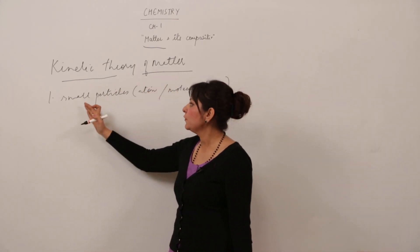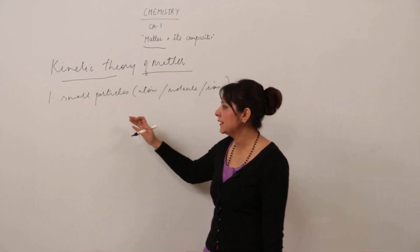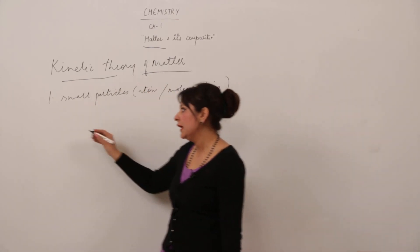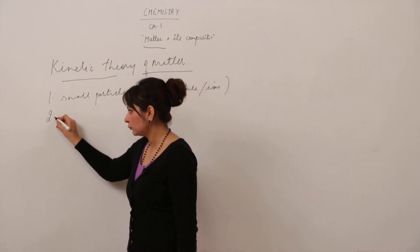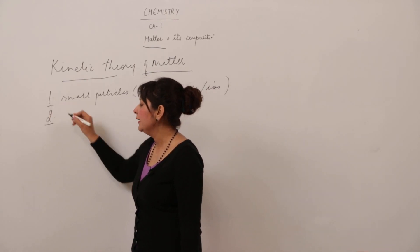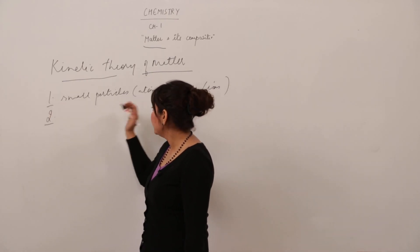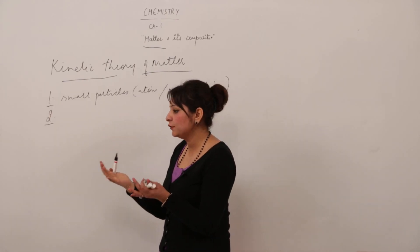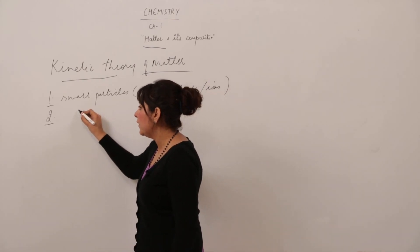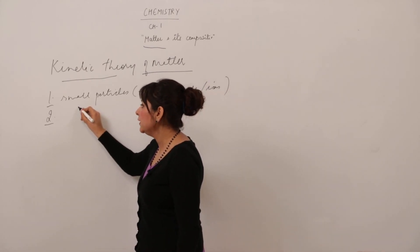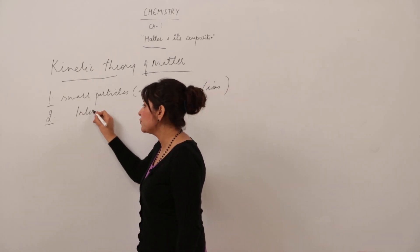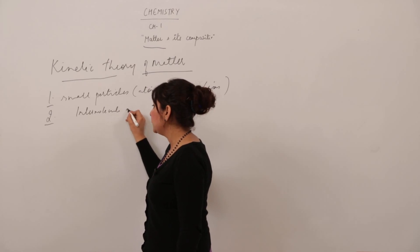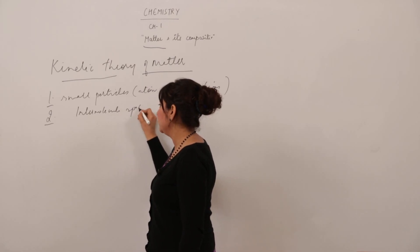Matter is made up of small particles — can be atom, can be molecule, can be ion. And when they closely exist together, there is a certain kind of intermolecular space between them.